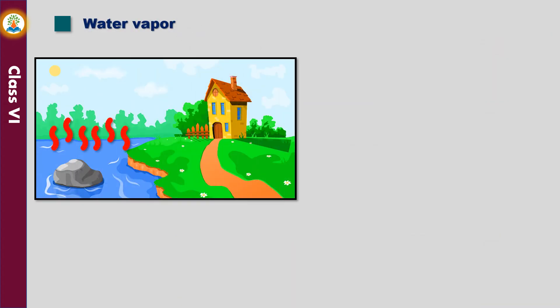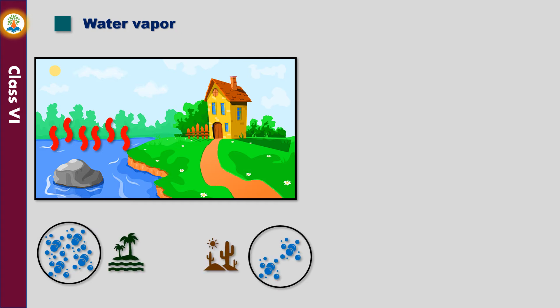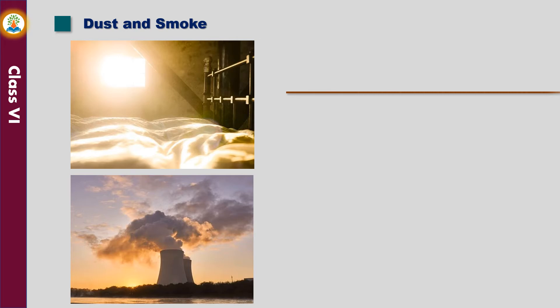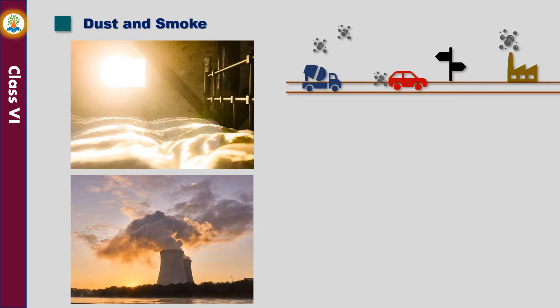Water evaporates from the surface of water bodies and forms water vapor. The composition of water vapor varies from place to place, region to region, and season to season. For example, concentration of water vapor is more in coastal areas than in desert areas. The presence of water vapor in air is important for the continuation of the water cycle in nature. The amount of dust particles and smoke in air varies from place to place. It is more near construction sites, roadsides and factories.